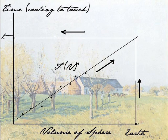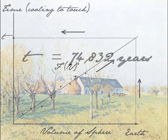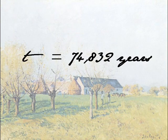At any rate, he finds a cooling time and repeats the same experiment with different materials such as glass and stone. From all of these, he calculates that the earth must be at least 74,832 years old.